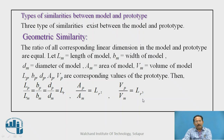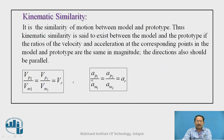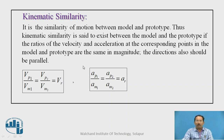Kinematic similarity is the similarity of motion between model and prototype. Kinematic similarity is said to exist between model and prototype if the ratios of velocity and acceleration at corresponding points in the model and prototype are equal in magnitude and the directions are parallel. The velocity ratio V1p/V1m = V2p/V2m = Vr, and similarly the acceleration ratio is denoted as ar.